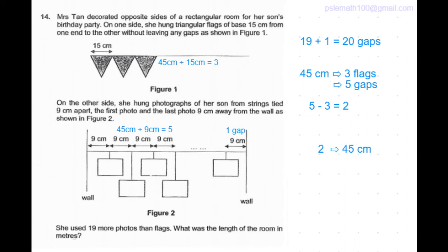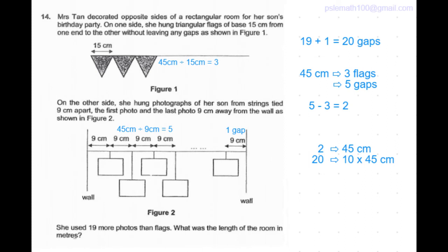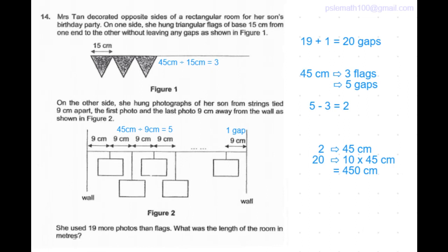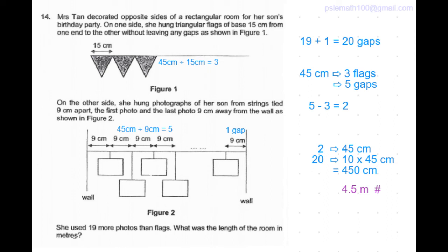We know that there were a total of 20 more gaps than the number of flags. So that corresponds to 10 times 45 cm which is equal to 450 cm. When we convert it to meters, that's divided by 100, which is equal to 4.5 meters.